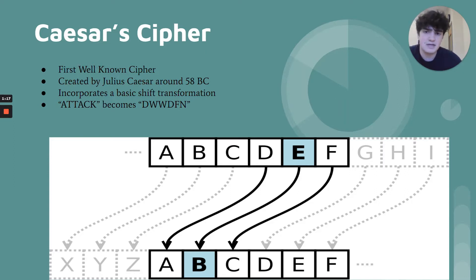For example, A became D, D became E, etc. By looking at the slide, we see that if Caesar wanted to send the message 'attack,' it would become D, W, W, D, F, N. Then, the intended recipient of this message simply had to shift each letter of the enciphered message three letters back in order to recover the original message.